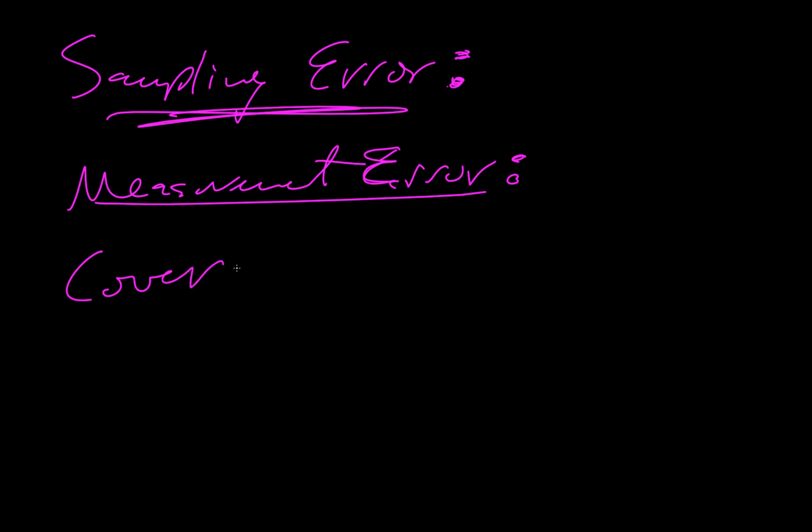Coverage error. So this occurs when a sample does not truly reflect the population we are trying to find information about. To avoid coverage error, the sample should be sufficiently large and unbiased. For example, if we're looking at the health of bees on a particular island, if we only collect data from 10 bees, it's not reliable because we didn't get a big enough sample.